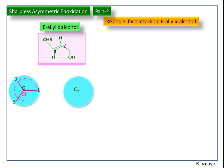Next we consider the second sp2 carbon atom. Here also the sp2 carbon atom, that is the double bond carbon atom, has higher priority than the CH2 carbon atom, then hydrogen. Here also the higher priority rotates in the anti-clockwise direction, so we get Cyphase attack. So when we see the molecule from the top side, that is when the oxidant attacks from the top side, we get Cyphase attack.